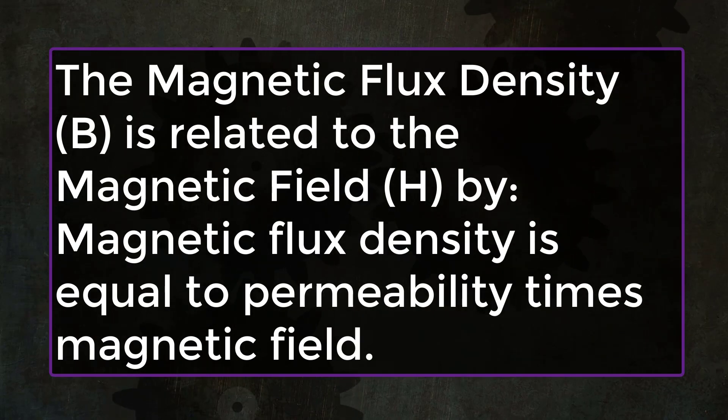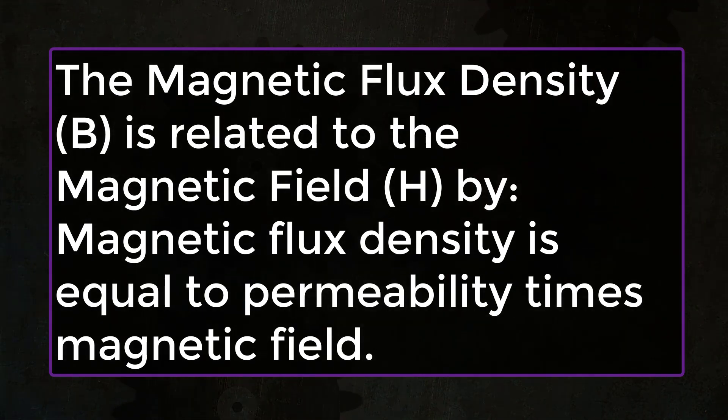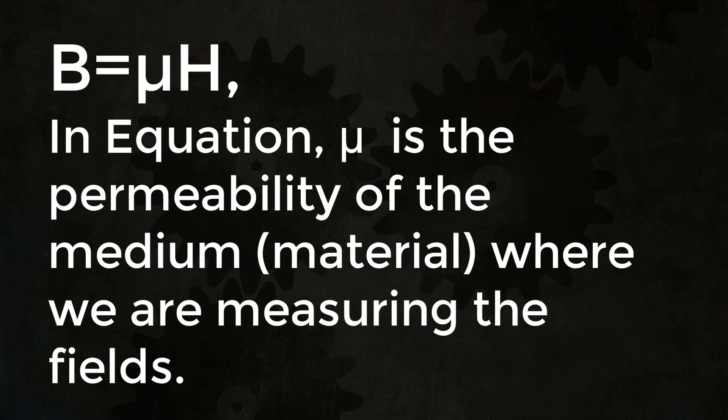The magnetic flux density B is related to the magnetic field H by magnetic flux density equals permeability times magnetic field, that is B equals mu H. In this equation, mu is the permeability of the medium, that is the material where we are measuring the fields.